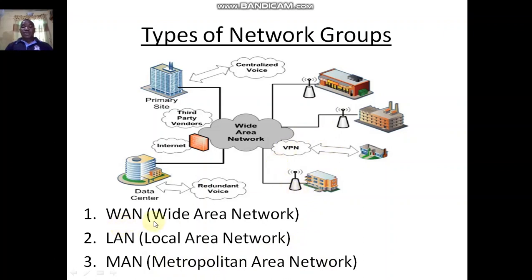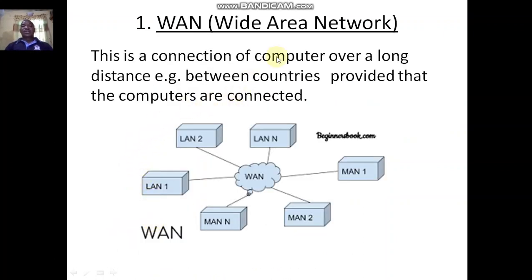What do we mean by WAN? WAN simply means the connection of computers over a long distance. This is the type of network that the internet uses, and that is the reason why we can have access to the internet all over the world. What does this Wide Area Network use? It uses LAN and MAN — meaning that the combination of LAN and MAN will give us WAN.